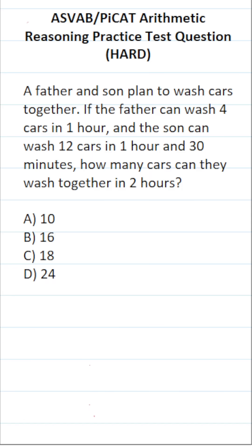This arithmetic reasoning practice test question for the ASVAB and PICAT says: A father and son plan to wash cars together. If the father can wash four cars in one hour and the son can wash 12 cars in one hour and 30 minutes, how many cars can they wash together in two hours?